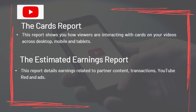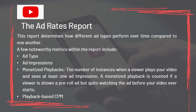The Cards Report shows how viewers are interacting with cards on your videos across desktop, mobile, and tablets. The Estimated Earnings Report details earnings related to partner content, transactions, YouTube Red, and ads. The Ad Rates Report determines how different ad types perform over time compared to one another. Noteworthy metrics include ad type, ad impressions, and monetized playbacks — the number of instances when a viewer plays your video and sees at least one ad impression, even if they quit watching the ad before the video ever starts.